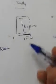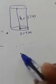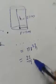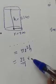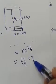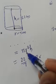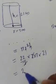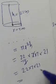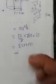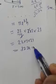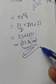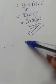Volume of Rada's cylindrical water bottle = πr²h = (22/7) × 7² × 21 = (22/7) × 7 × 7 × 21. Cancelling one 7: 22 × 7 × 21 = 3234 cm³. Comparing: Ramu's bottle holds 840 cm³ and Rada's bottle holds 3234 cm³. Since 3234 > 840, Rada's water bottle will hold more water.